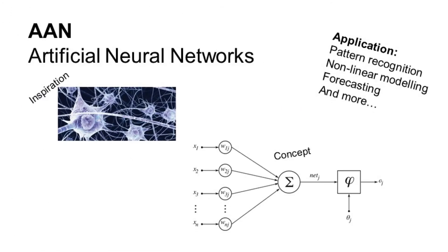Also inspired by nature are artificial neural networks. These interconnected groups of simple mathematical rules try to mimic biological nervous systems. They have the ability to derive meaning from complicated or imprecise data.